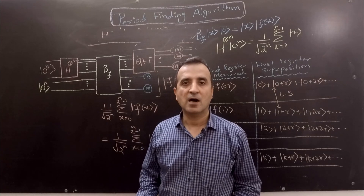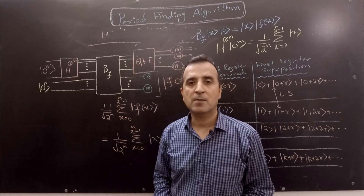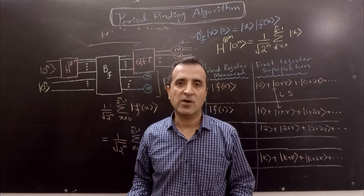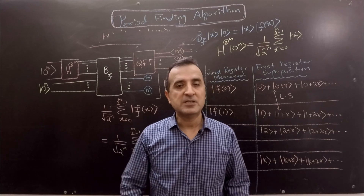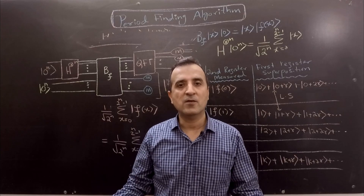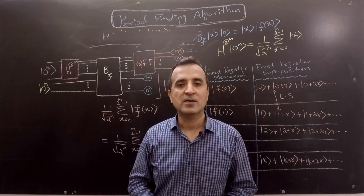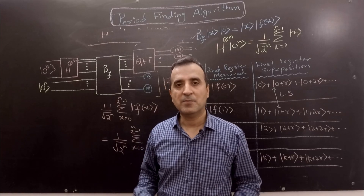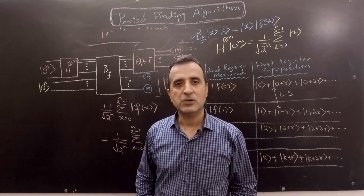Quantum Fourier transformation also changes the period of a function. The period was R, but after applying QFT the period becomes 2^n / R — we have also discussed this in the properties of QFT. I hope this discussion has been good enough for you to understand the period finding algorithm. If not, don't worry — in the next video I will present a concrete example with each and every step, and by the end of that video all doubts should be clear.